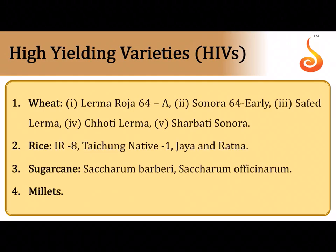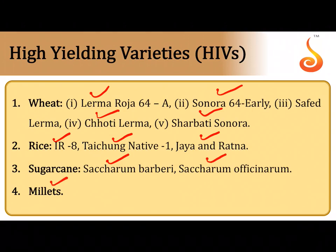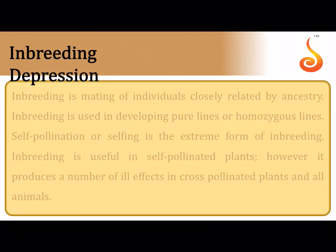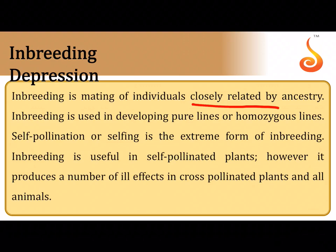High-yielding varieties include Lerma Rojo, Sonora 64, Safed Lerma, Choti Lerma, and Sharbati Sonora for wheat; IR8, Raichung native, Jaya and Ratna for rice; and various millets. Inbreeding — repeated self-pollination or mating of closely related individuals — leads to inbreeding depression: a gradual decline in productivity and fertility, and loss of vigor (the strength or hardiness of character expression).